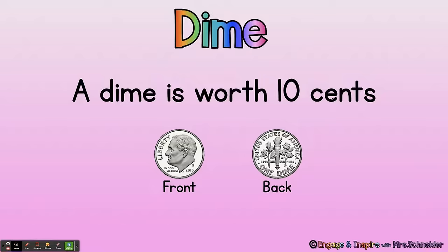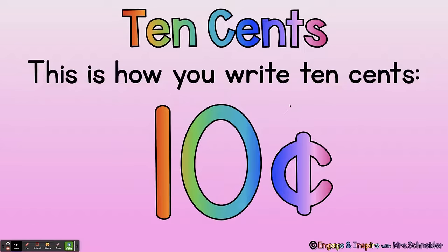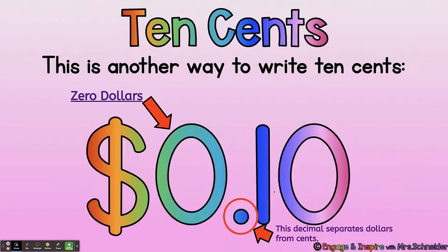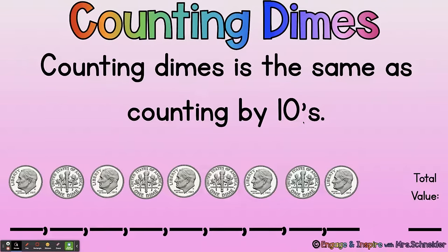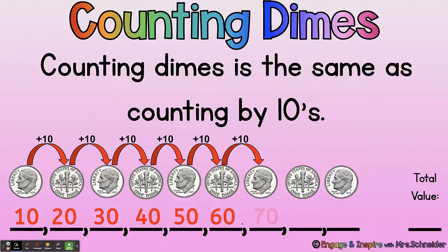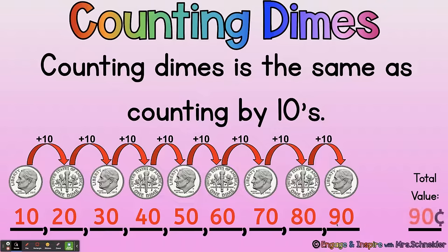A dime is worth ten cents. This is how you write ten cents: draw it in the air — one, zero, and a C with a line through it. Another way to write ten cents: dollar sign, zero dollars, decimal point to separate the coins, and ten cents. Counting dimes is the same as counting by tens: ten, twenty, thirty, forty, fifty, sixty, seventy, eighty, ninety. So nine dimes has a total value of 90 cents.